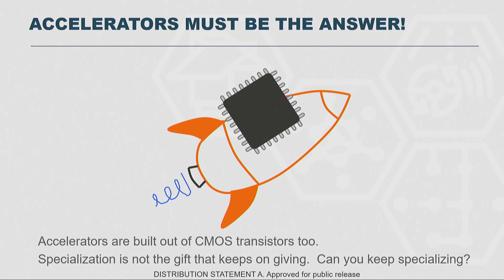So what is the implication of that? Well, the implication is that specialization may not be the gift that keeps on giving. As you specialize, and you're building this out of transistors that already exist, and those transistors stop scaling, will we be able to keep moving forward? Specialization is probably not the gift that keeps on giving. You can probably specialize once, maybe twice, maybe three times, but probably for the same application you can't keep specializing over and over again.